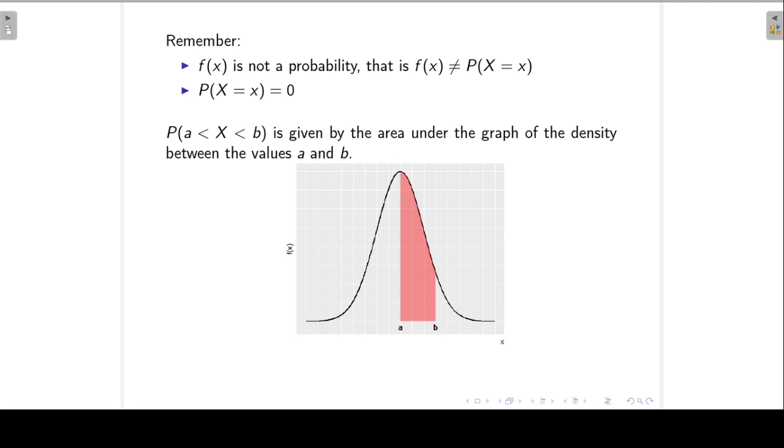We can only find the probability that my continuous random variable falls within an interval. And this probability is given by the area under the graph of my density function between the limits a and b. So if you know calculus, this probability will be the integral from a to b of my density function.